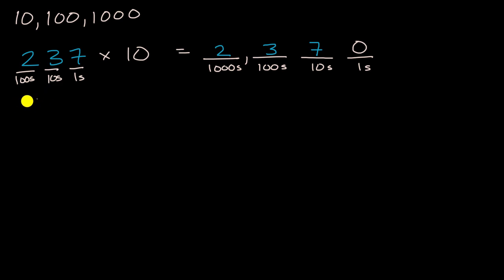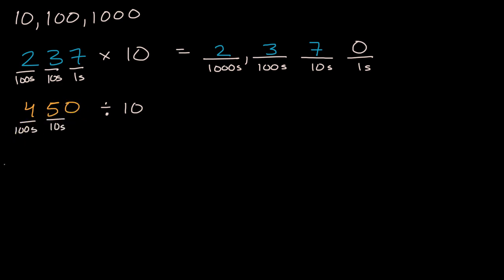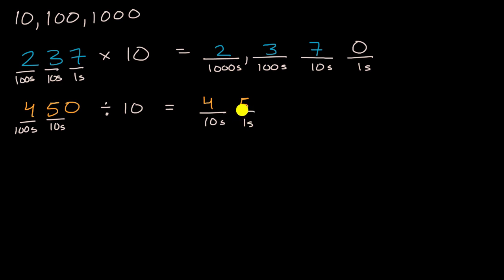But what if we were to go in the other direction? What if we were to take 450 and divide it by 10? Well, if multiplying by 10 shifts the digits one place to the left, then dividing by 10 is going to shift the digits one place to the right. We have a four in the hundreds place, a five in the tens place, and nothing in the ones place. What used to be in the hundreds place is now in the tens place, and what used to be in the tens place is now in the ones place. So 450 divided by 10 is 45. Another way to think about it is we removed the right zero when we divided by 10.